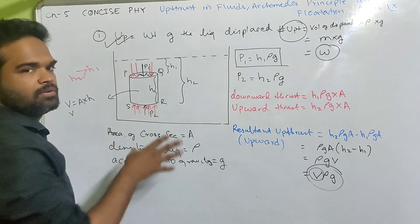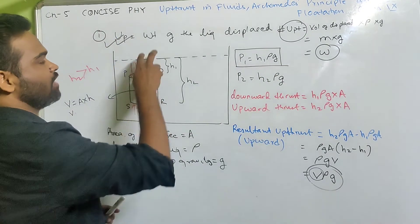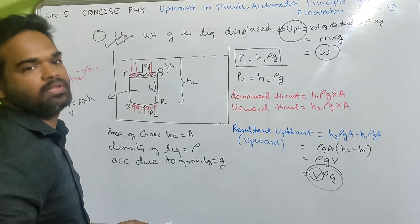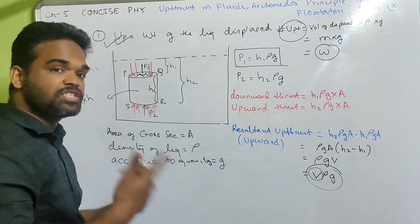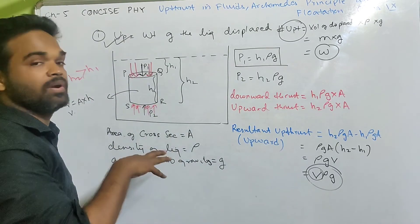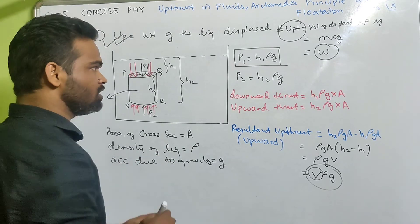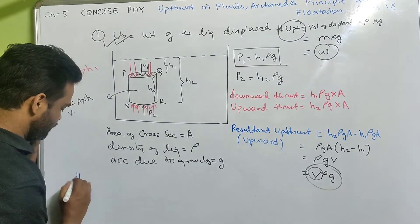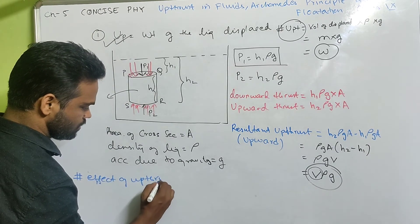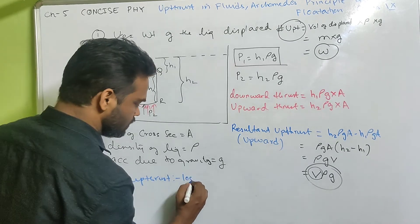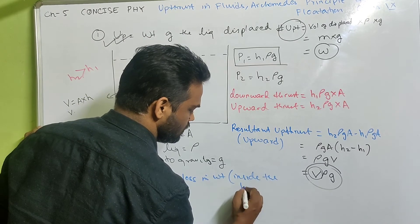We took a cylindrical body, but you can take any body - the result is the same. The uptrust equals the weight of the liquid displaced by the body. The body experiences an upward force, uptrust, due to which there is a loss in weight in the liquid. So the effect of uptrust is loss in weight inside the liquid.